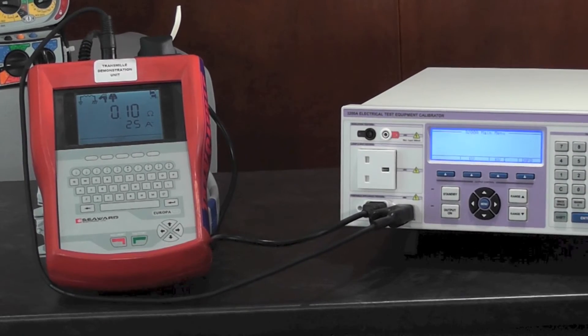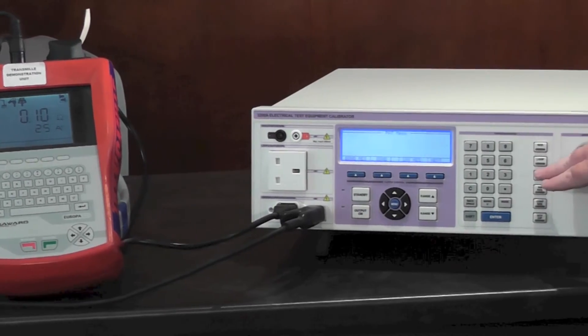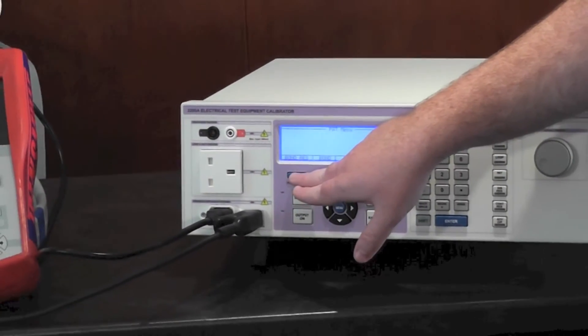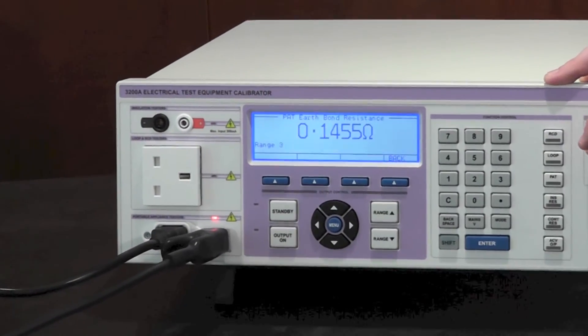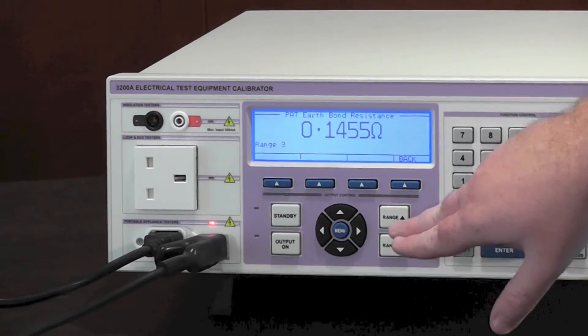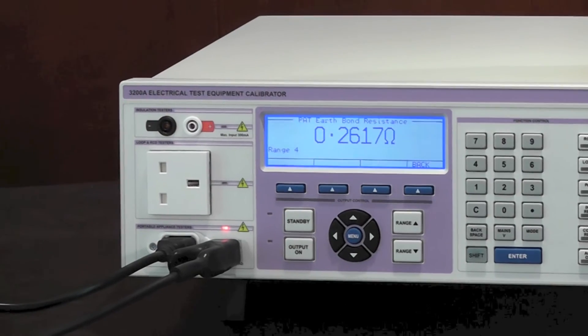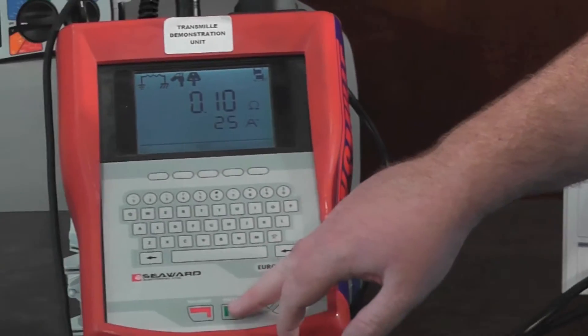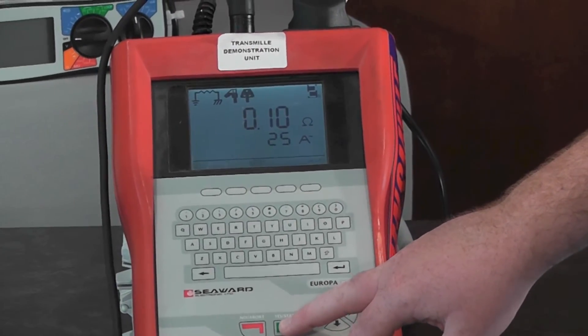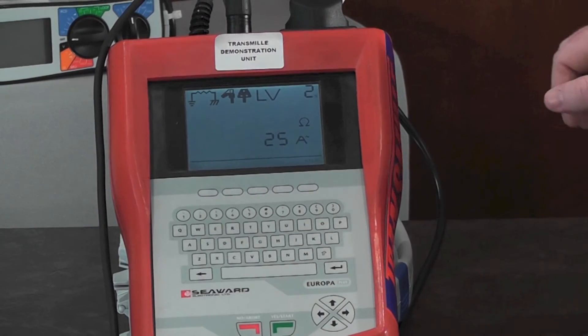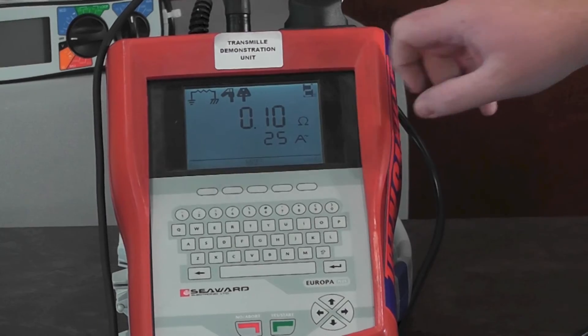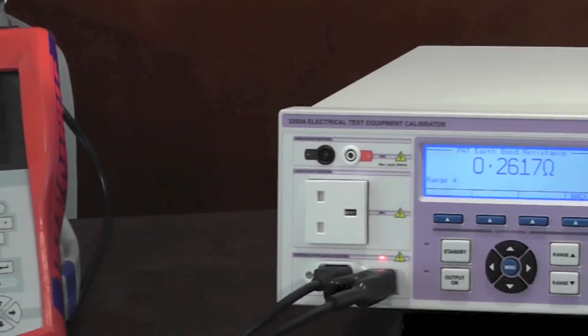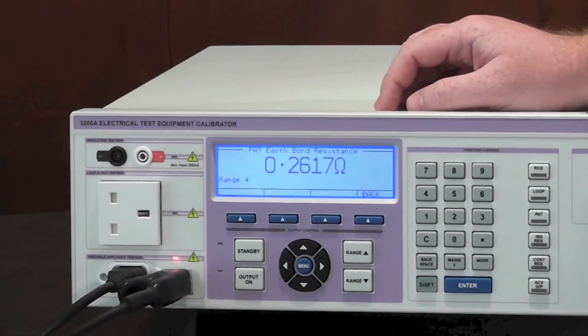I will now enter the PAT mode, select bond resistance as required, select the range using the digital control or the range up and down keys and then press test on the tester. You will then compare the indicated result from the PAT tester against the supplied result from the 3200A.